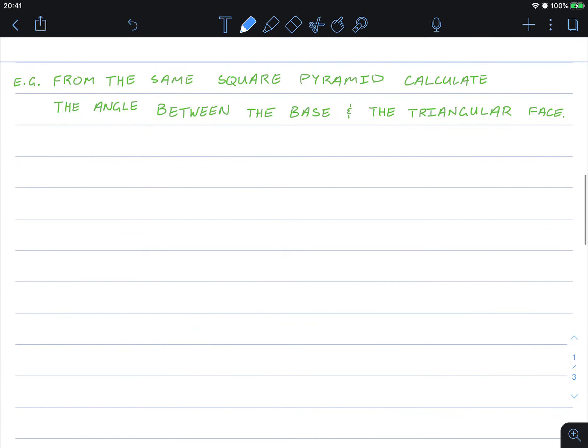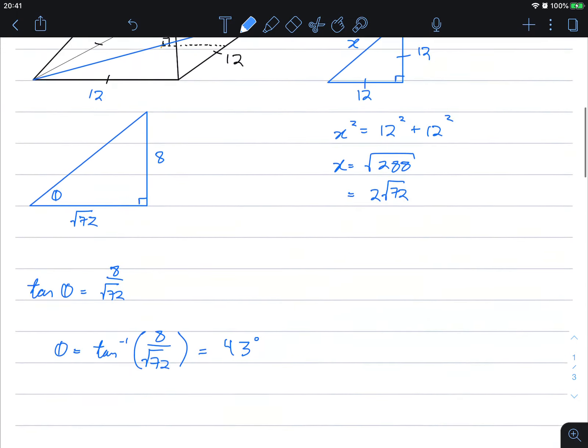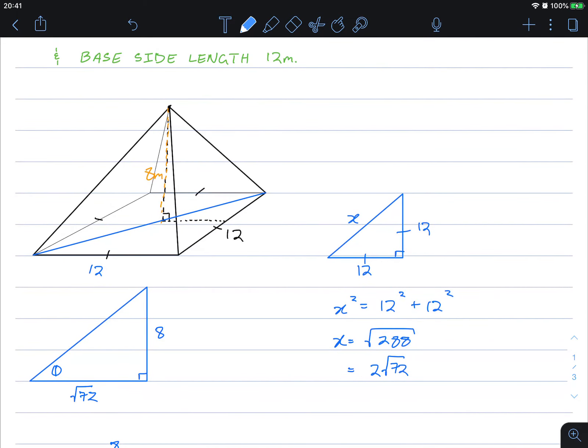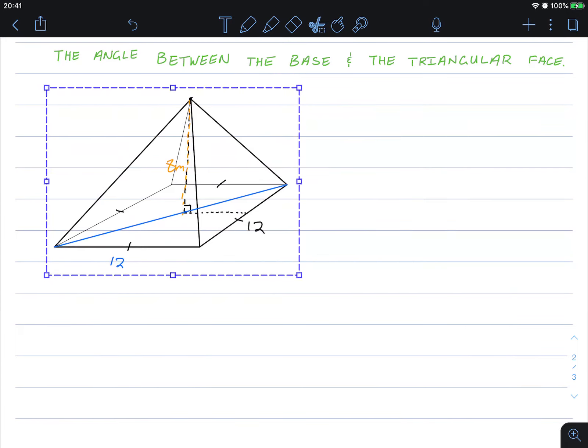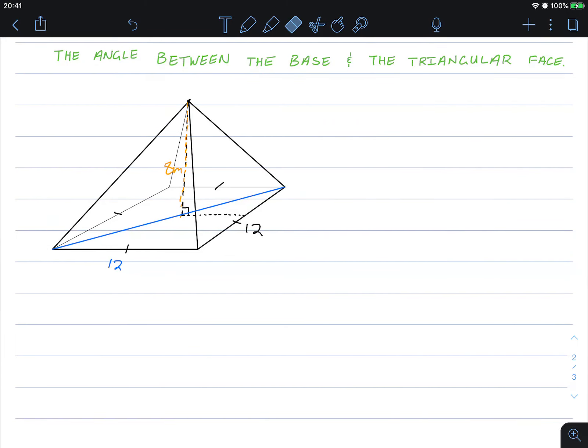From the same square pyramid, calculate the angle between the base and the triangular face. All right, so let's copy this out. And this time, let's try and draw what the question is asking of us.